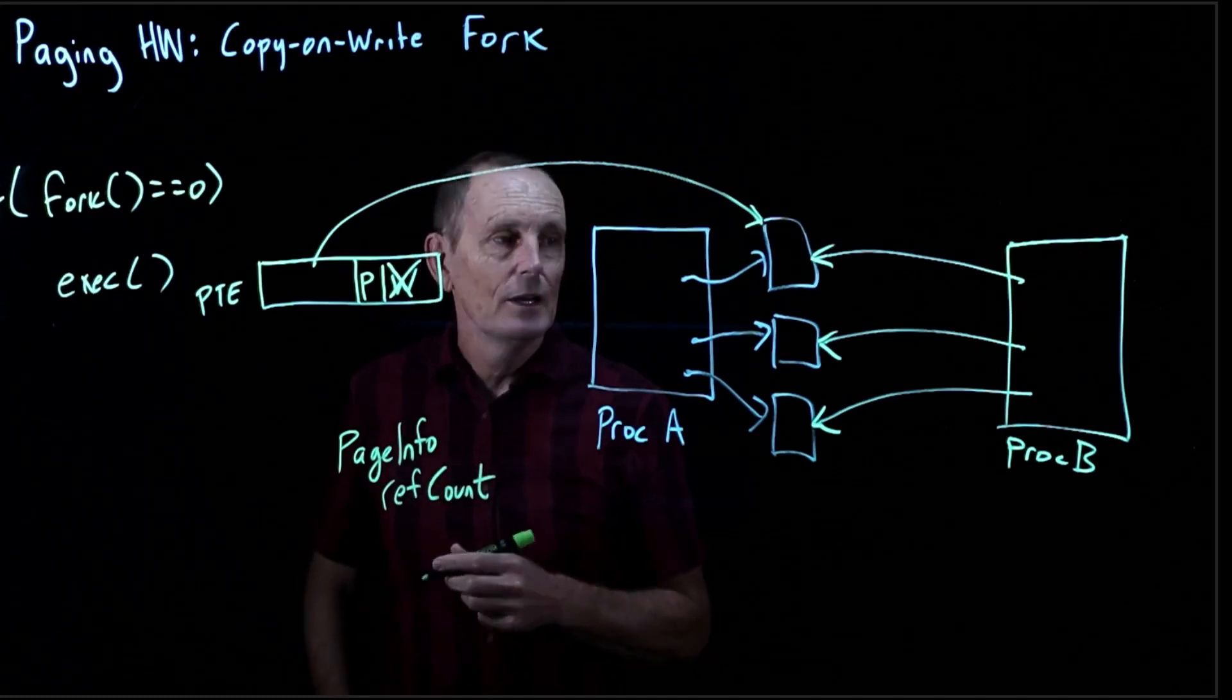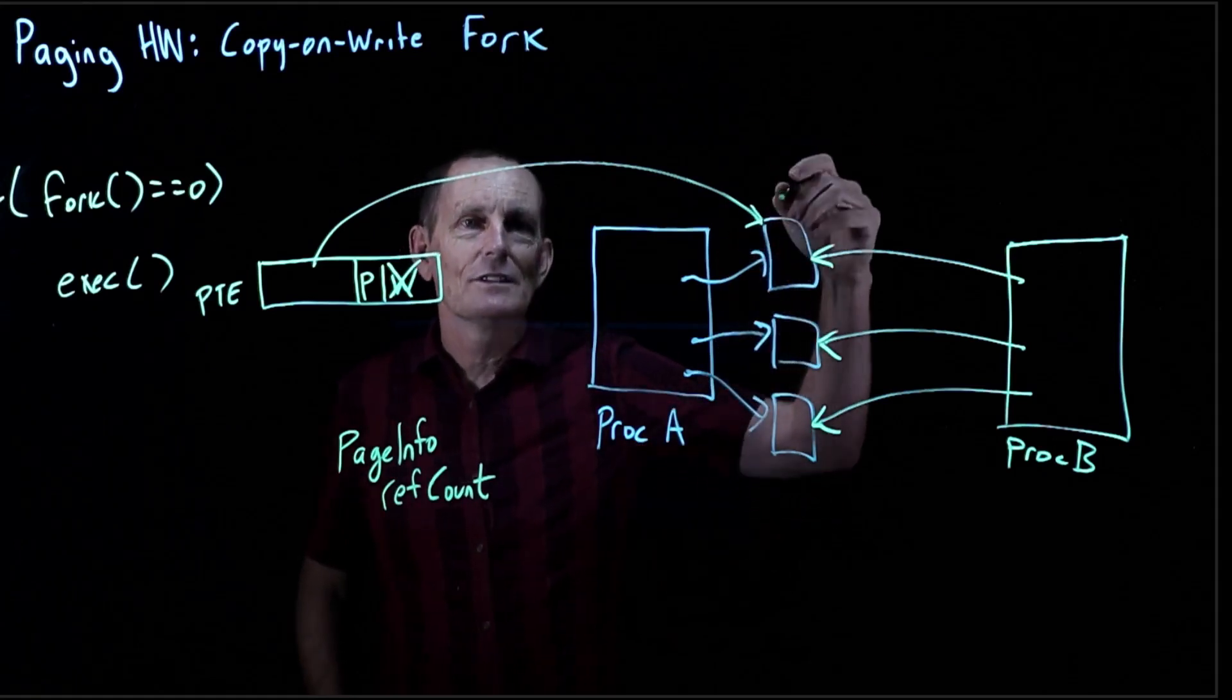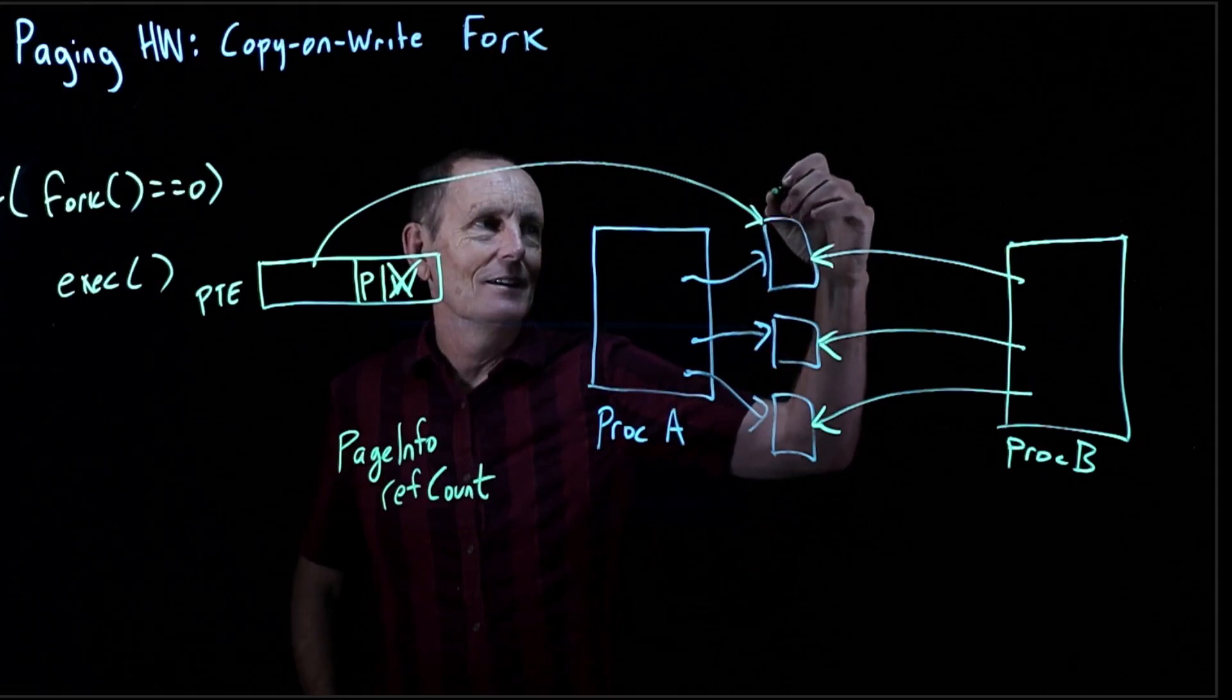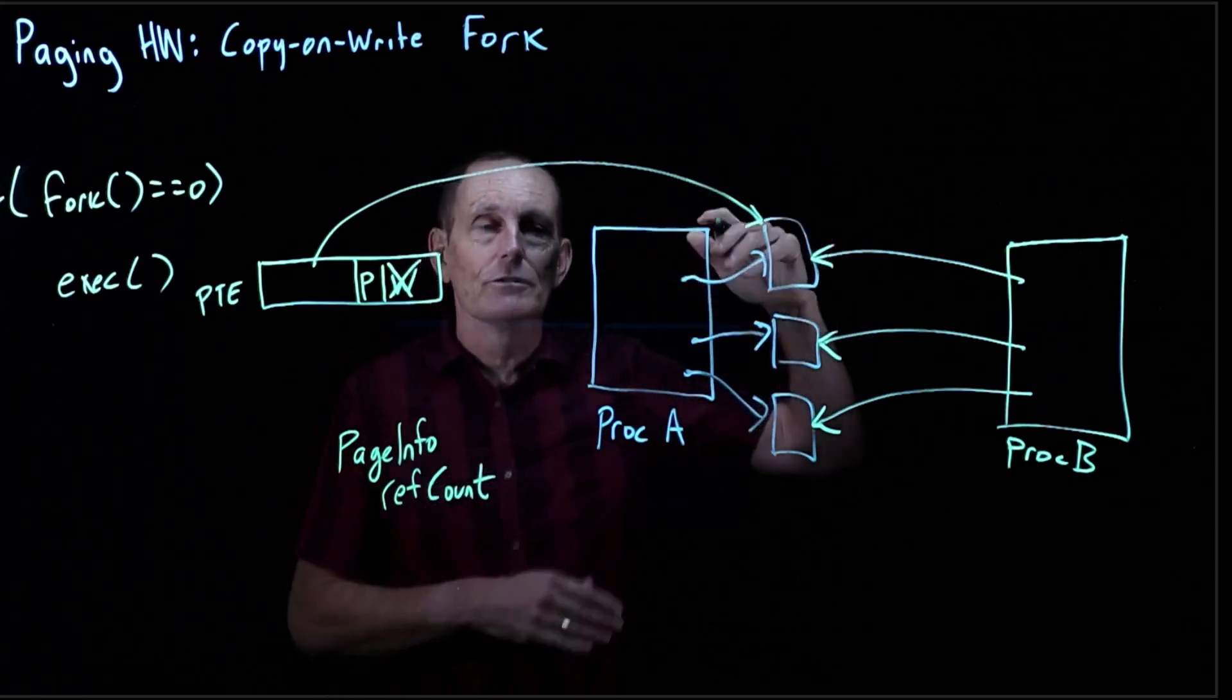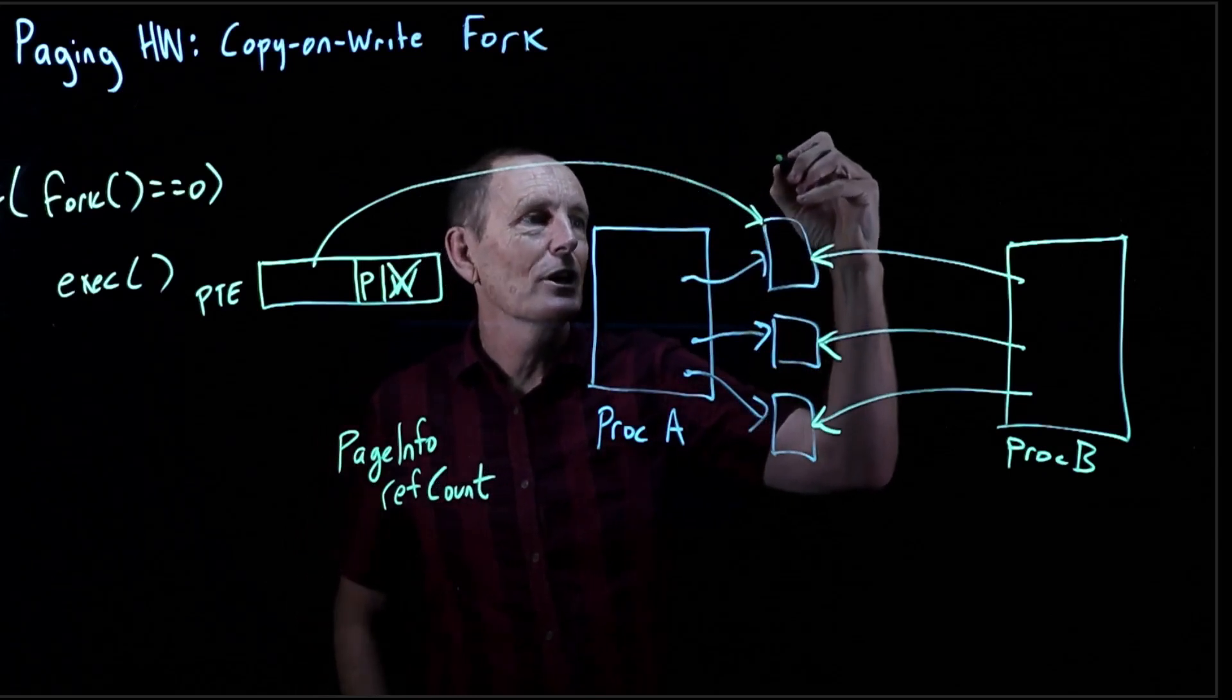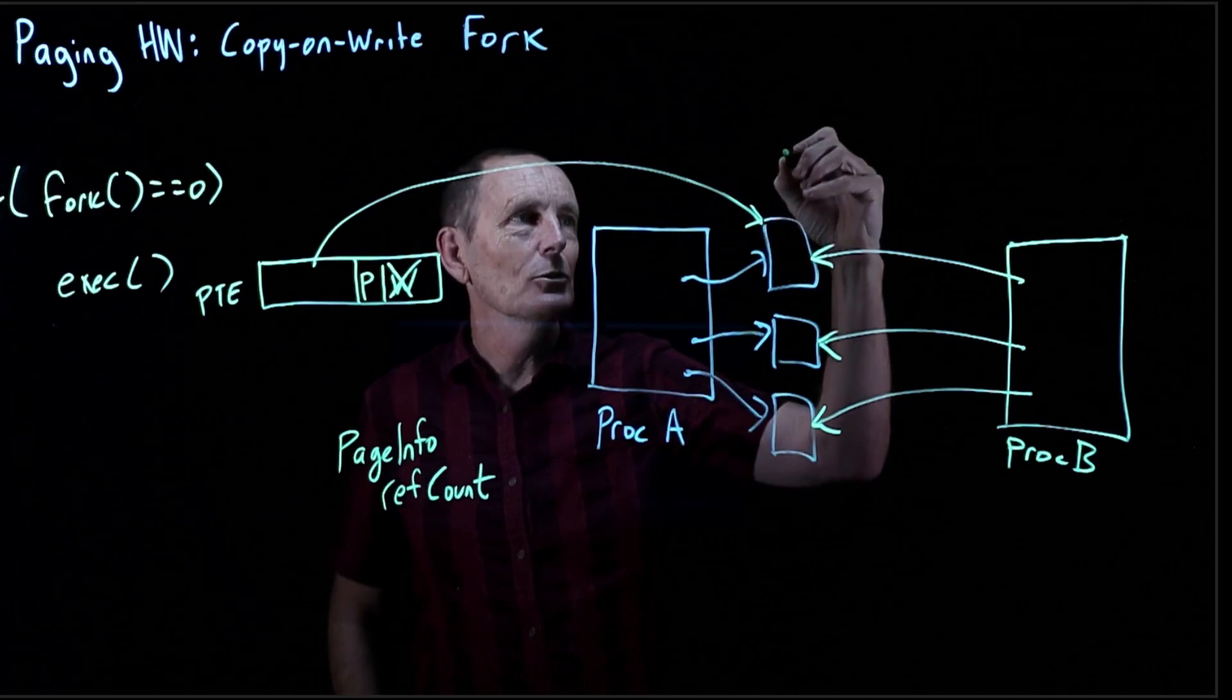So imagine we have this for every page, because this will be useful. So for this page, we're going to keep track. I'm going to show this as a page info sitting around that's referring to this. We certainly have some data structure referring to all the pages, but we're going to keep track of the fact that now the reference count of this page is 2.